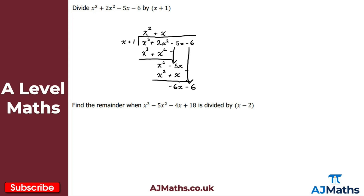We repeat the process once more: take minus 6x and divide by the highest power in the divisor, which gives minus 6. We then take minus 6 and multiply by the divisor x plus 1, giving minus 6x and minus 6. Subtracting: minus 6x minus minus 6x is zero, and minus 6 minus minus 6 is also zero.